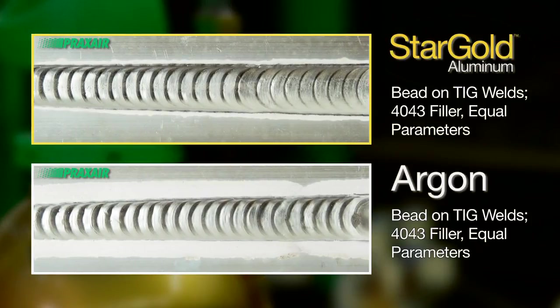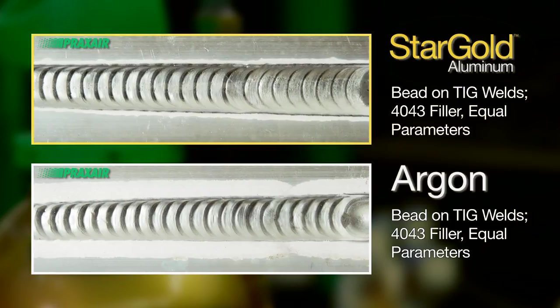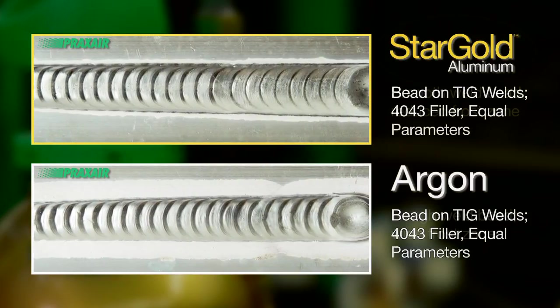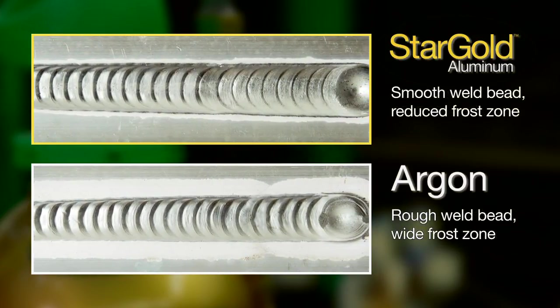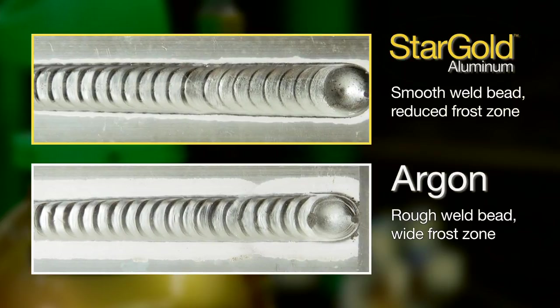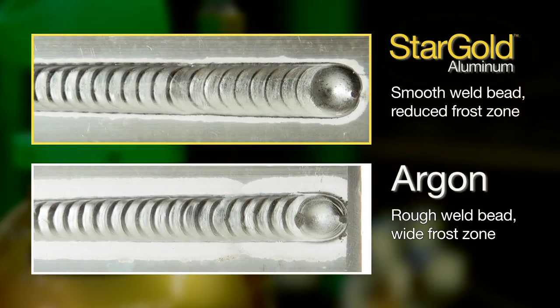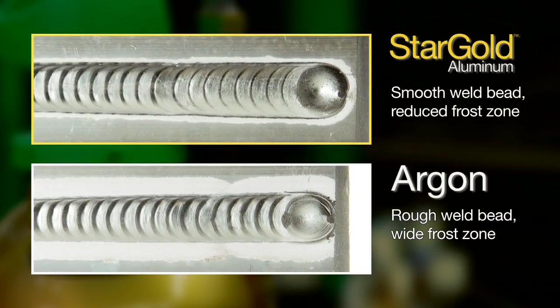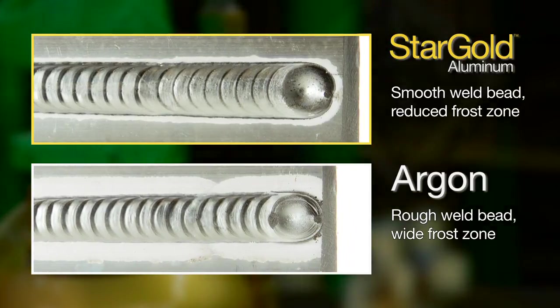As shown in these photographs, the use of Stargold Aluminum can help create a reduction in the cleaning or frost zone and an increase in weld bead smoothness and wetting characteristics. This is a result of the increased arc stability obtained when using Stargold Aluminum.